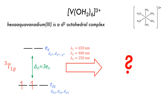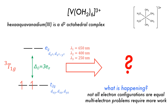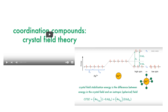Spectroscopy tells us that there are three different excited states at different energies — we have three absorptions. To tackle this multi-electron problem, a little more work is required, as not all electronic configurations are equal. This multi-electron problem will be discussed in a different video. The basis of solving it is in crystal field theory, which we have a video on, and it will be linked in the description below.